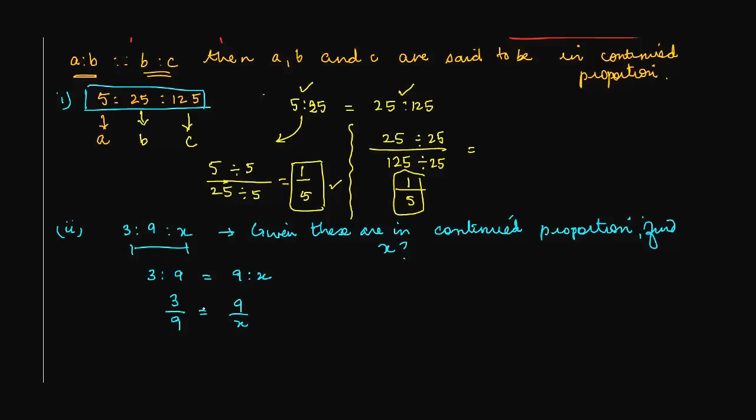Now we do the cross multiplication. This will give us X into 3 will give us 3X is equal to 9 times 9 will give us 81.